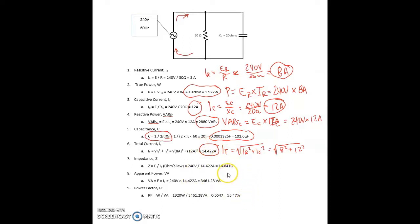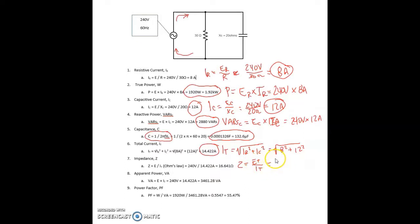For total impedance, there are different ways to calculate this. The easiest is simple Ohm's Law: total impedance equals total voltage over total current, equals 240 volts over 14.422 amps, and that gives 16.6 ohms for total impedance.